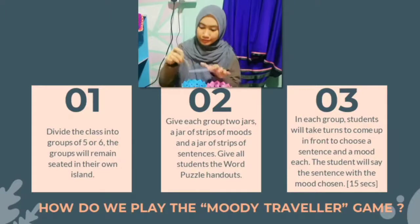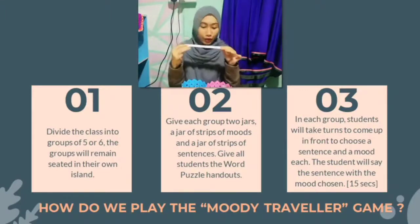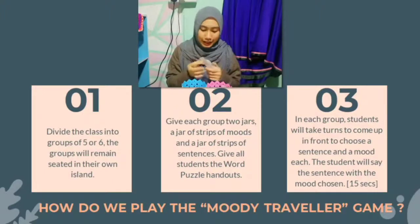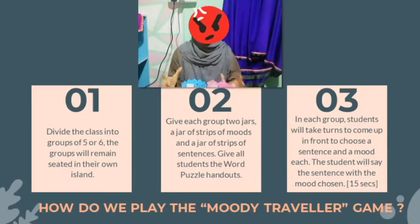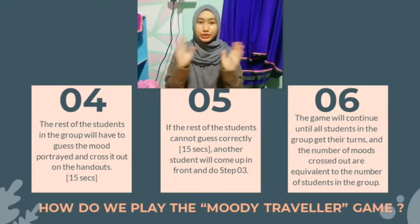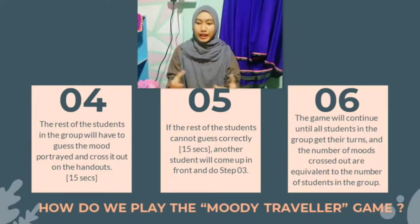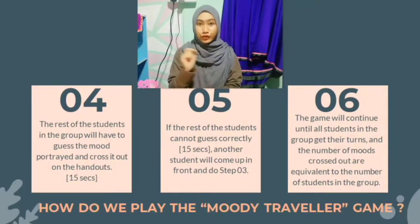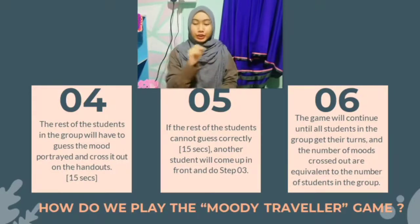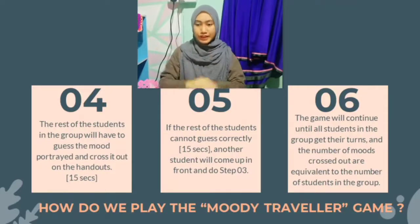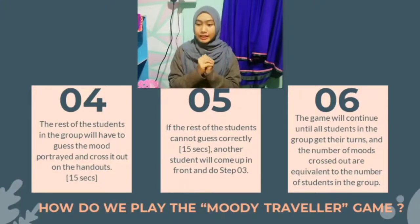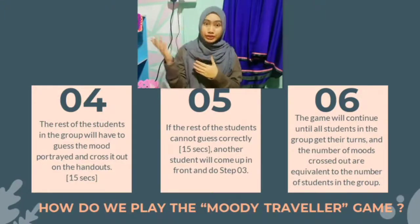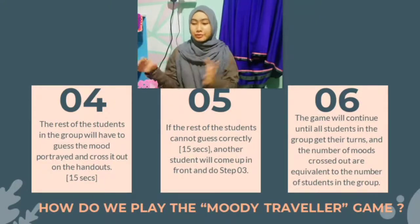For example, sentence 3: 'Oh boy, I'm going to miss my flight!' Step 4: The rest of the students in the group will have to guess the mood portrayed, and when guessed correctly, they will have to search for the mood in the puzzle handout and cross it out. If students in the group cannot guess correctly within 15 seconds, the game will continue with another student's turn in the group to perform as in Step 3.